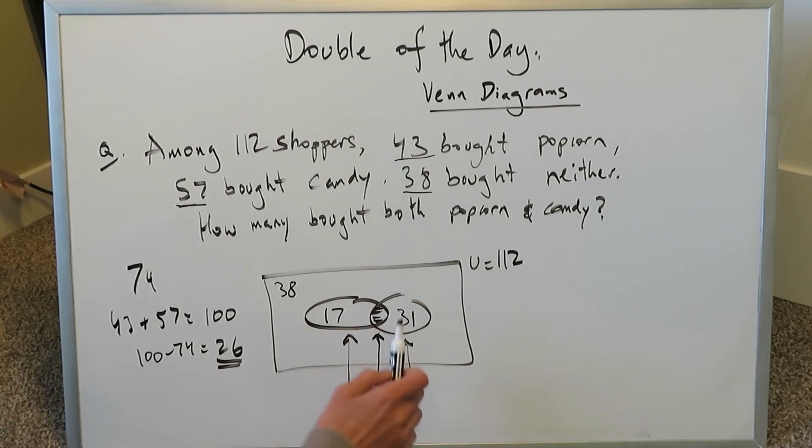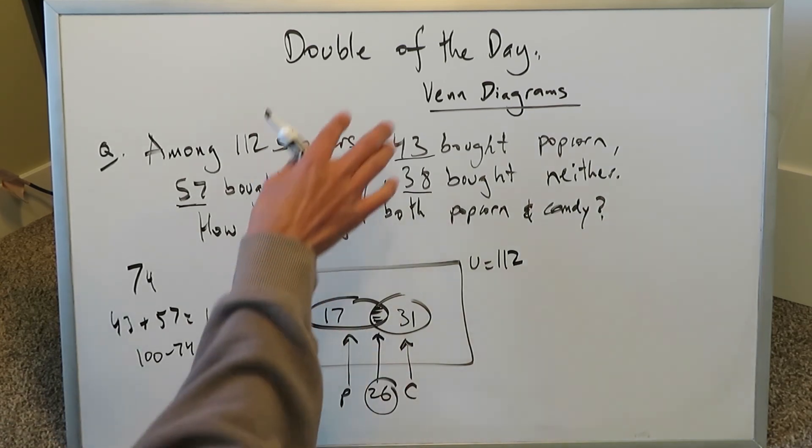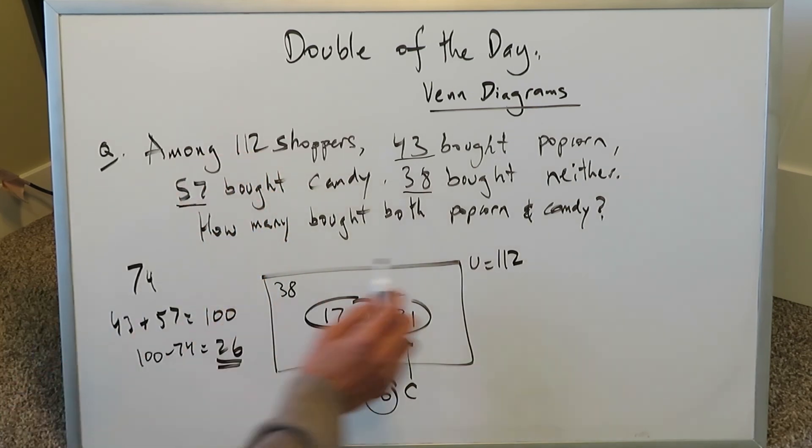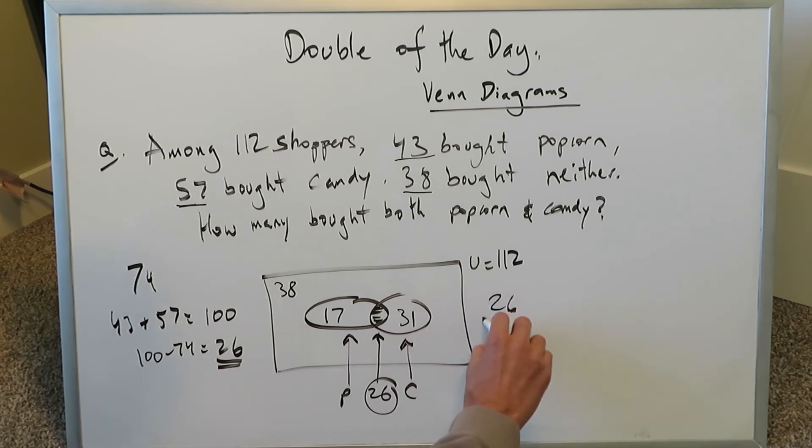So what do we say with regards to probability? If you were to randomly select one person out of these 112, the probability that that person bought both items is 26 over 112, which could be simplified to 13 over 56.